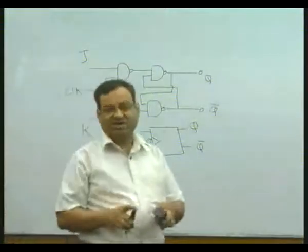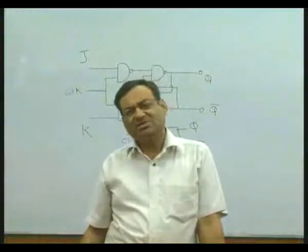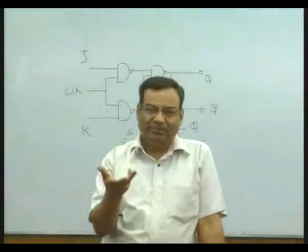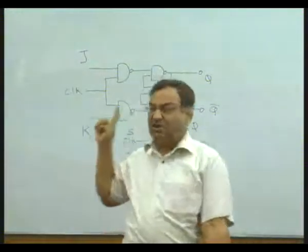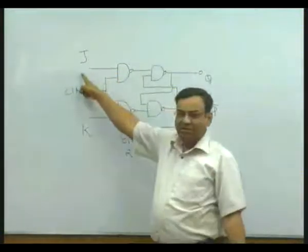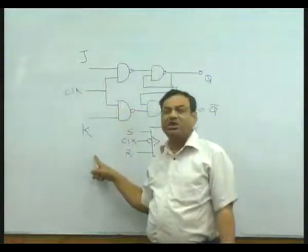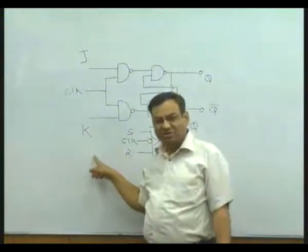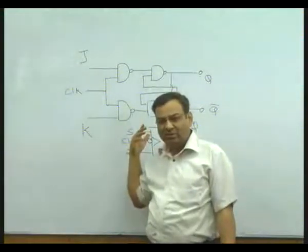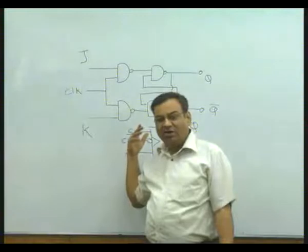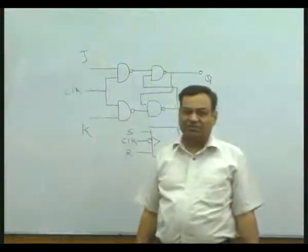Actually, SR that is set reset flip flop and JK flip flop is kind of one and the same, except S is called as J and R is called as K in honor of the name of the scientists who proved this particular theory. In honor of their names they are called as J and K flip flops.